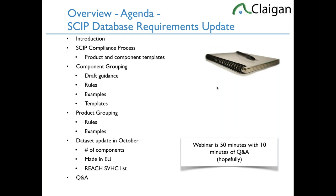We're going to talk about the concept of component grouping using generic components — say brass components instead of listing every single brass component — and what the guidance is on that. Then we're going to talk about product grouping, especially for professional products, where you can group within some limitations. Consumer products currently don't have the same leeway; they still have to be done by UPC code. Professional products will have a lot more leeway on product grouping.